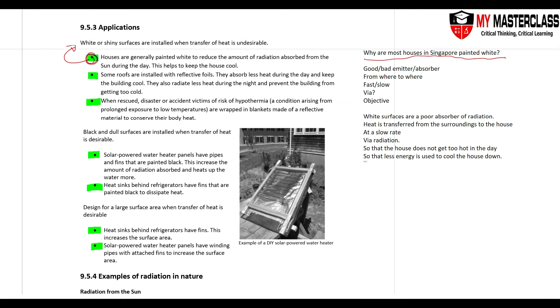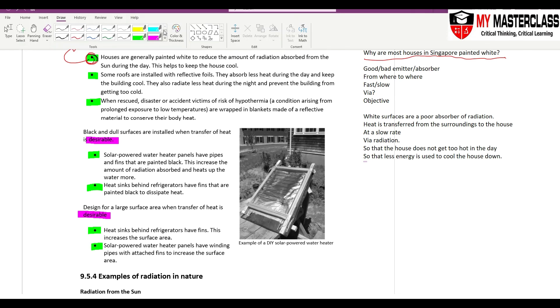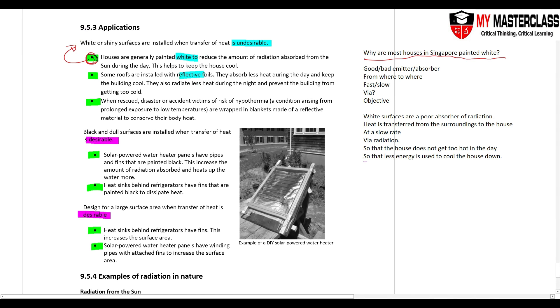They mainly fall into two different categories. One is undesirable heat transfer, and the other one is desirable heat transfer. Think of whether the heat transfer is desirable or not. If it is undesirable, you will see white, shiny surfaces all the time. If it is desirable, you will always get black. And of course surface area, fins, winding pipes.